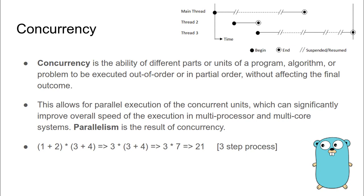So the first way of calculating the result of this simple mathematical equation is that I first calculate the result of 1 + 2 which is 3, then I calculate the result of 3 + 4 which is 7, and then I multiply 3 and 7 to get 21.